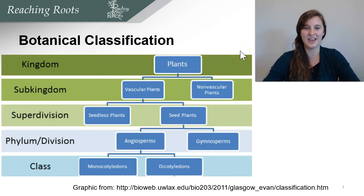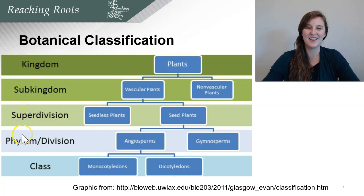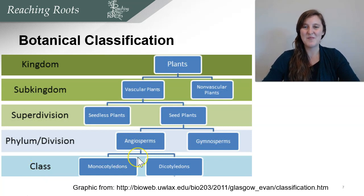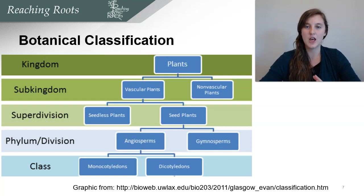Let's talk about this classification. We start with kingdom, then sub-kingdom, then super-division, phylum, division, class, order, genus, and species. You may have learned a fun way to memorize this as a child, but we're going to go through this specifically on how it relates to plants.